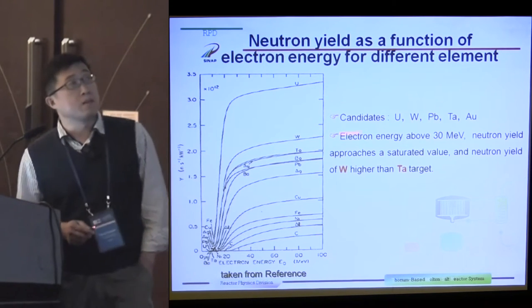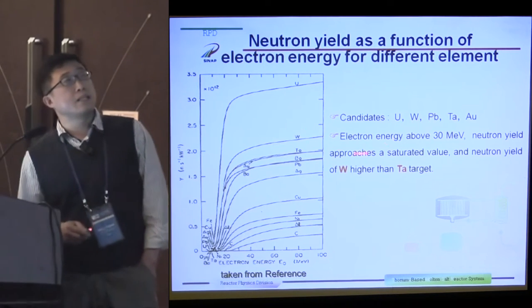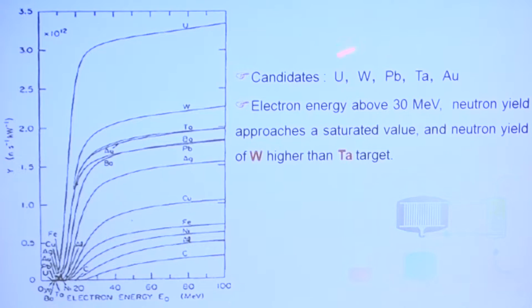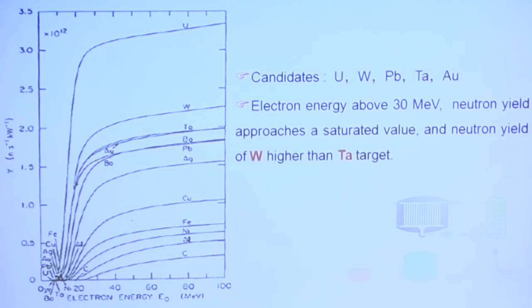So there are the candidates: uranium, tantalum, lead, tantalum, and gold. Electron energy above 30 MeV, neutron yield reaches a saturated value. Here is our consideration of nuclear data measurement priority. So first, we will study thorium-232, and then we will study uranium-233, from thermal neutron energy to slow neutron energy.